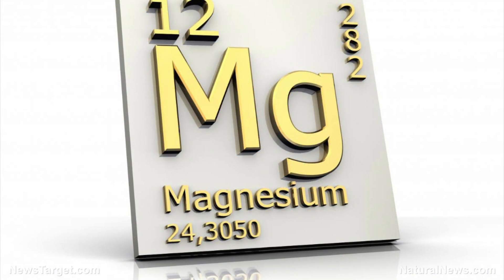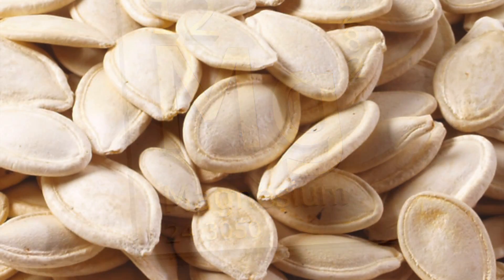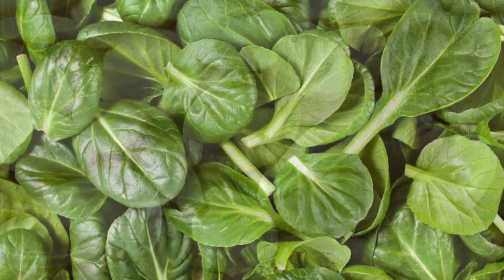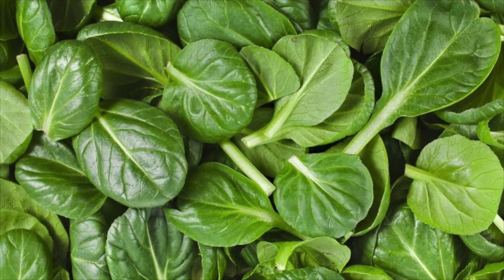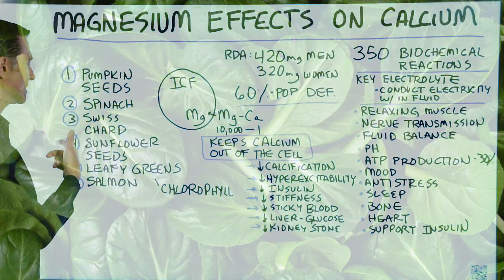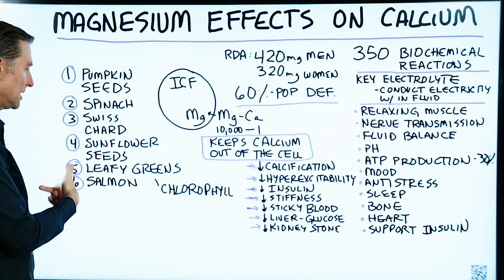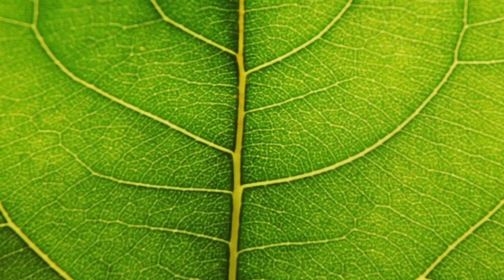The best sources of magnesium are pumpkin seeds, then spinach, then Swiss chard and sunflower seeds, leafy greens, and salmon.